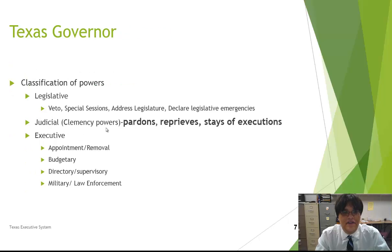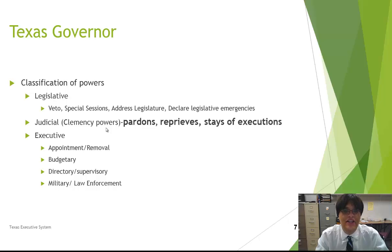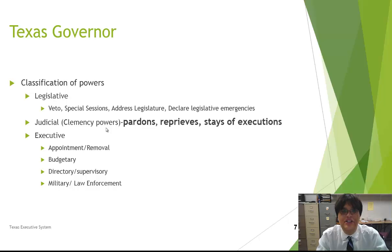The Texas governor's powers generally fall into three classes, as your textbook classifies them. First, legislative powers: the governor can exercise the veto, call special sessions of the legislature, offer an address to the legislature every year, and declare legislative emergencies. Second, judicial powers: the clemency powers I mentioned — pardons, reprieves, stays of executions, commutations, and paroles.